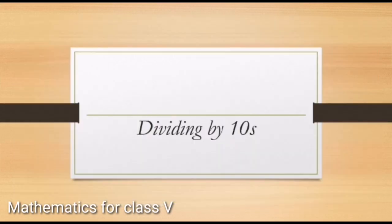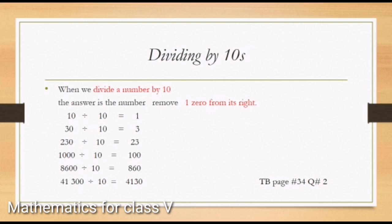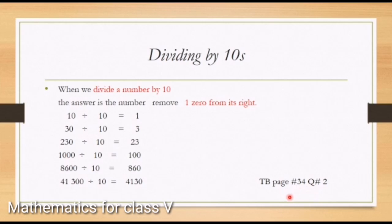This is the first part of today's topic: dividing by tens. Before further discussion, we have to learn the definition. When we divide a number by 10, the answer is that number with one zero removed from its right. Here we have question number two from textbook page 34. The first part is 10 divided by 10 equals 1. We have 10 divided by 10, and we remove the zero from the right side.